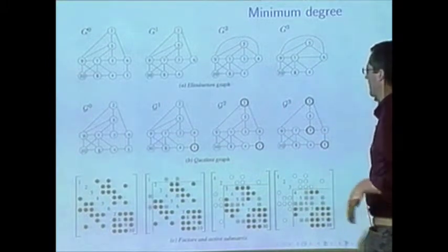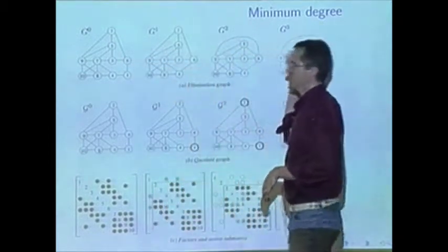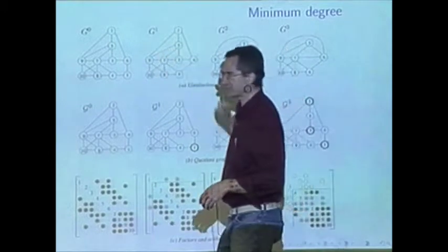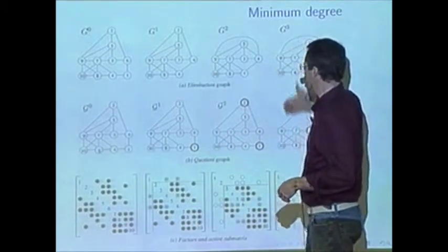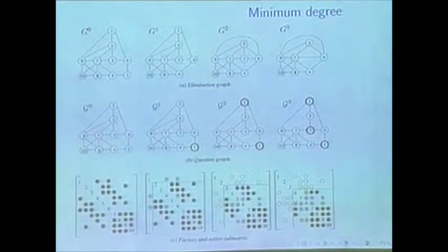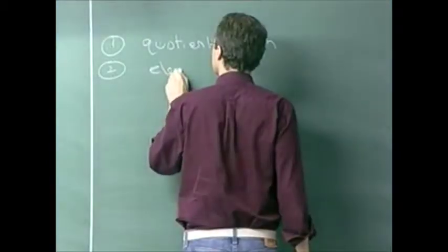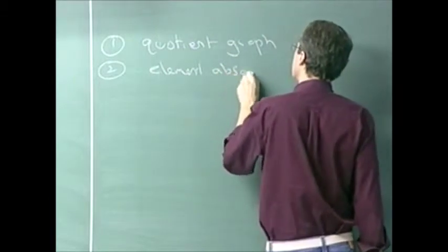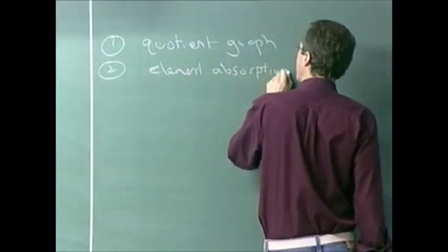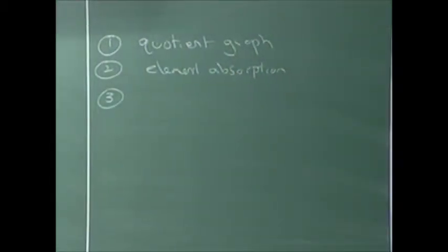That's what you get here with the sequence of elimination graphs, quotient graphs, and matrices. If you were just to apply the algorithm to the elimination graph, it would be very slow and take a huge amount of memory. By moving to the quotient graph and by using something called element absorption — using the quotient graph and element absorption together...